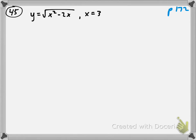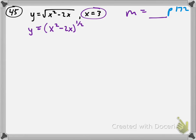Y equals the square root of the expression — written as y equals (x squared minus 2x) to the 1/2. For this particular problem we're supposed to find the equation of the tangent line to this curve at x equals 3. The most important thing to keep in mind is we need to know what the slope is and what the coordinates of the point are in order to come up with the equation for the line — specifically the tangent line.